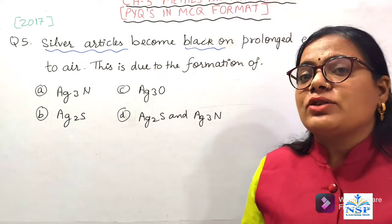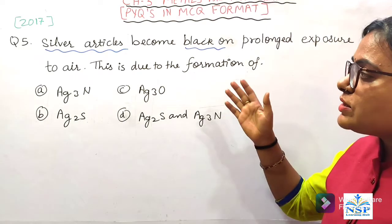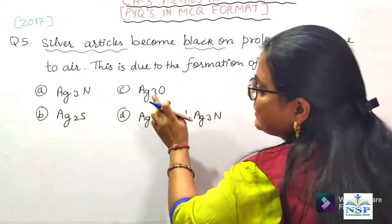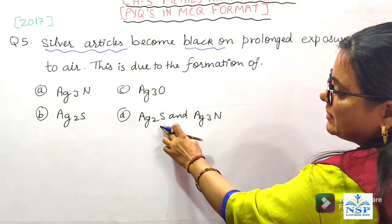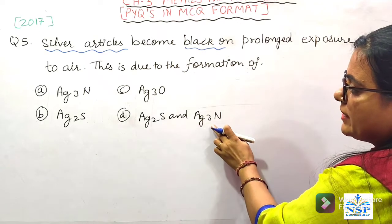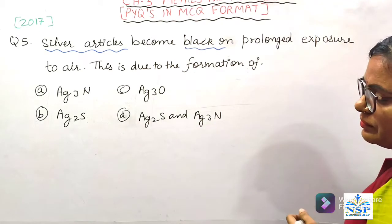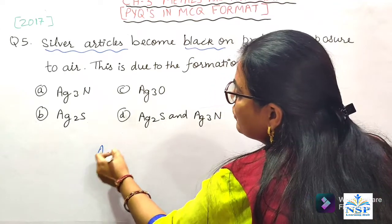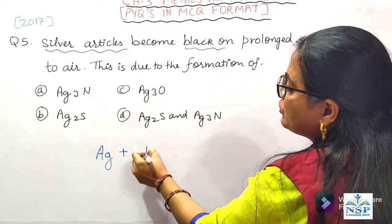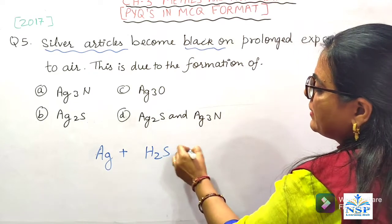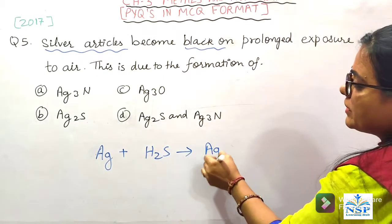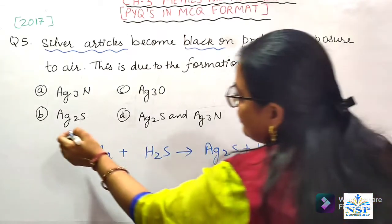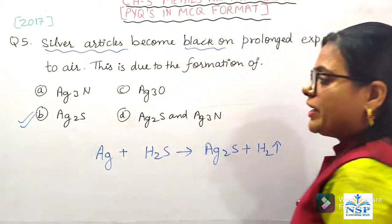जब हम silver को atmosphere में खुला छोड़ते हैं तो वह धीरे-धीरे black color की हो जाती है। तो ऐसा किसलिए होता है — उसमें कौन सा product बनता है? Options: AG3N, AG2S, AG3O. Silver (Ag) atmosphere के hydrogen sulfide के साथ reaction करती है और AG2S बना देती है। यानि कि black color silver sulfide की वजह से होता है।